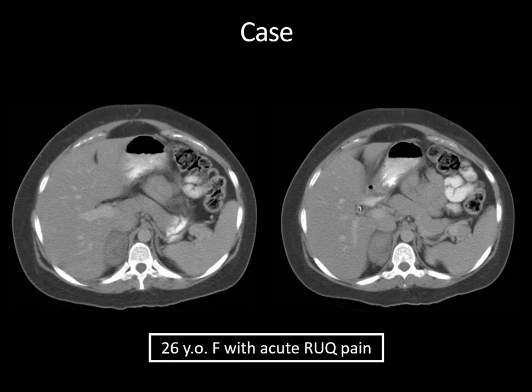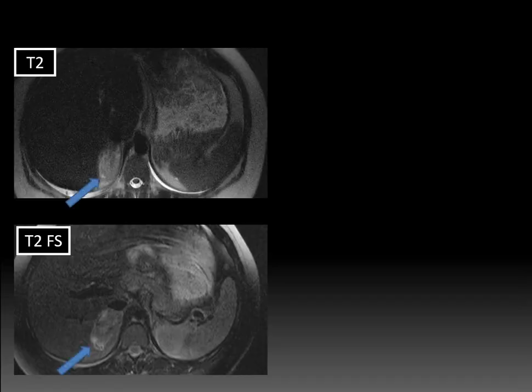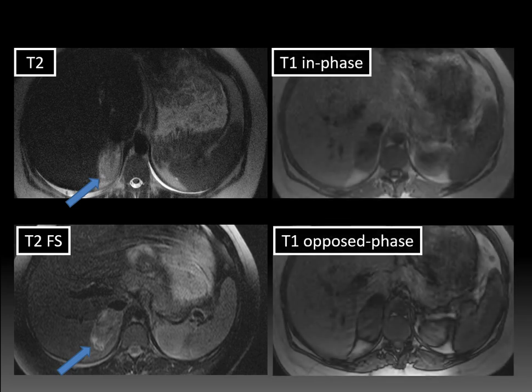Let's look at another case. This was a patient who came with acute right upper quadrant pain, and you can see that this CT scan shows a well-circumscribed ovoid heterogeneously hyperdense right adrenal mass. Looking at the MRI for this patient, there is a heterogeneously T2 hyperintense and hypointense right adrenal mass. The upper image is without fat suppression and the lower image has fat suppression. You can also see some trace pleural effusions. Looking at the T1 in-phase/opposed-phase chemical shift imaging series, this mass demonstrates no signal dropout — again not consistent with a lipid-rich adrenal adenoma.